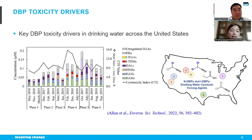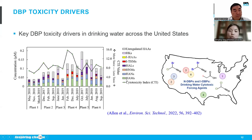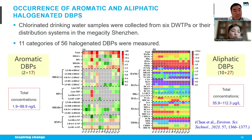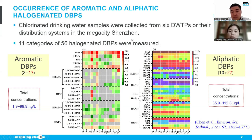A recent study conducted by Dr. Susan Richardson found that nitrogenous DBPs and iodinated DBPs are key DBP toxicity drivers in drinking water across the United States. However, only aliphatic DBPs were involved in their studies — they didn't test those new emerging aromatic DBPs. Accordingly, we tried to consider both aliphatic and aromatic DBPs together. Initially, we collected chlorinated drinking water samples from six drinking water treatment plants or their distribution systems in the mega city of Shenzhen, located in southern China.